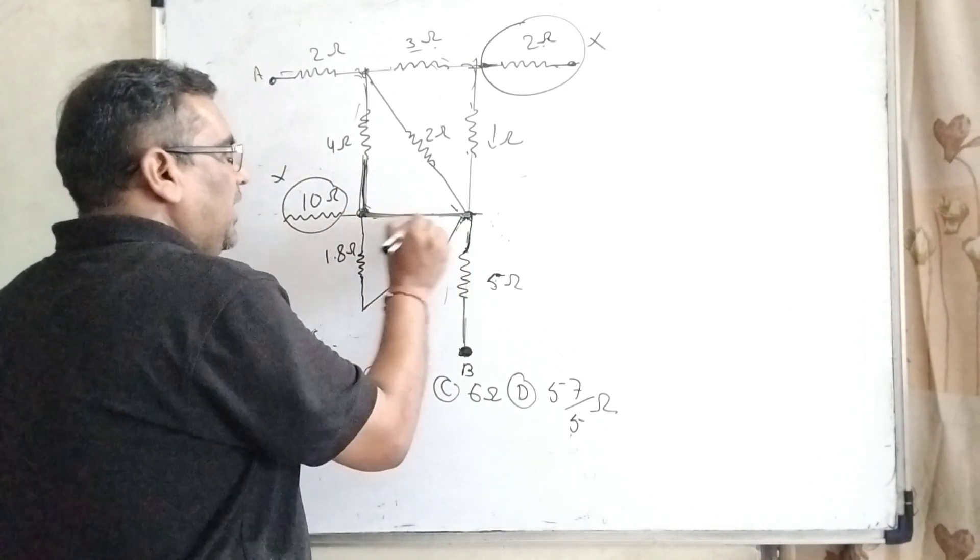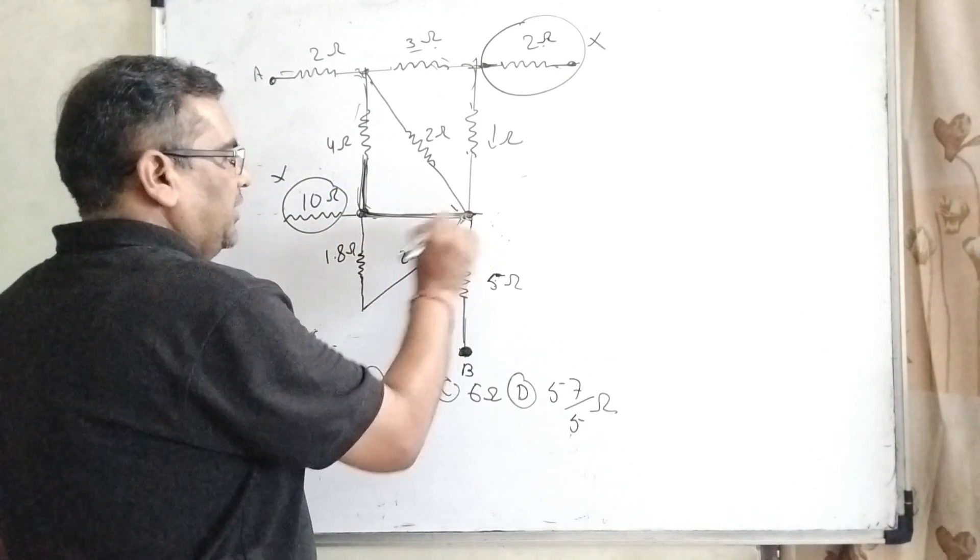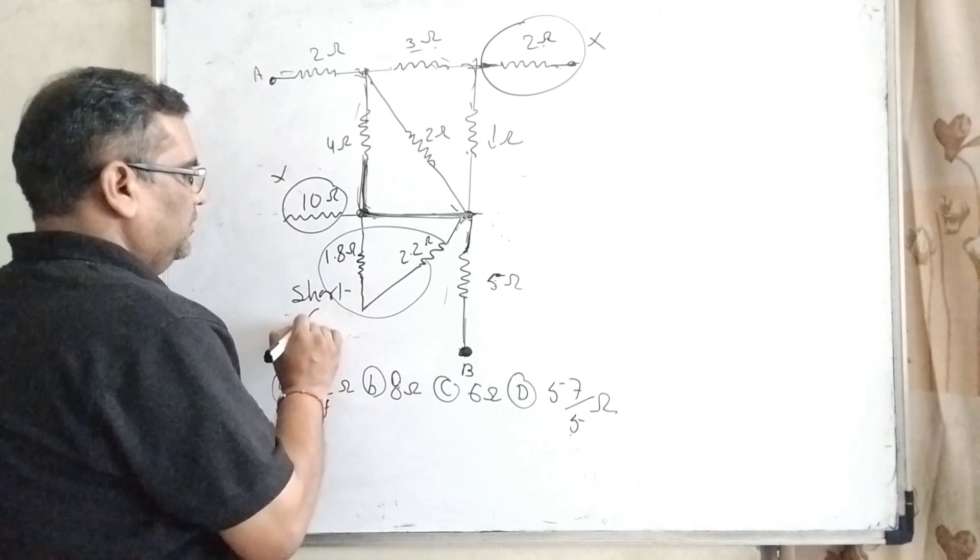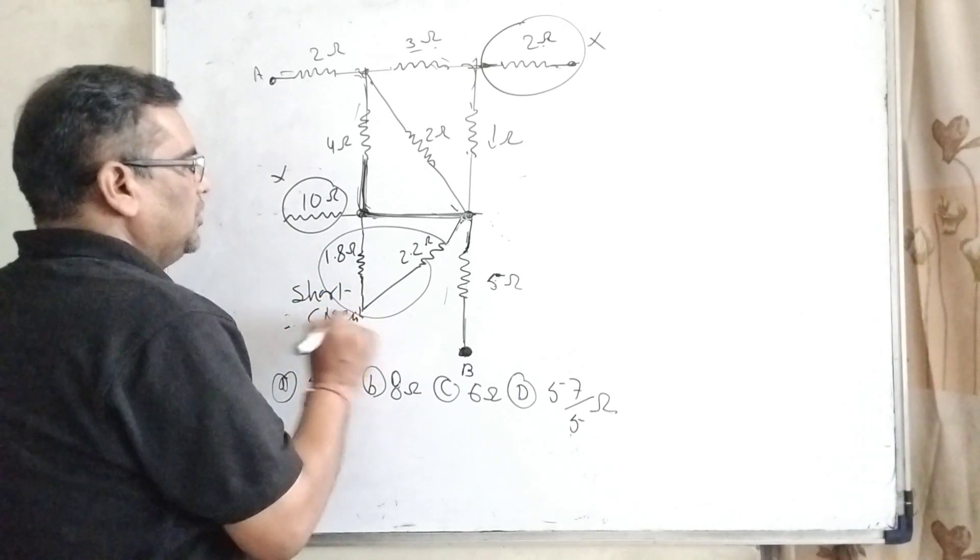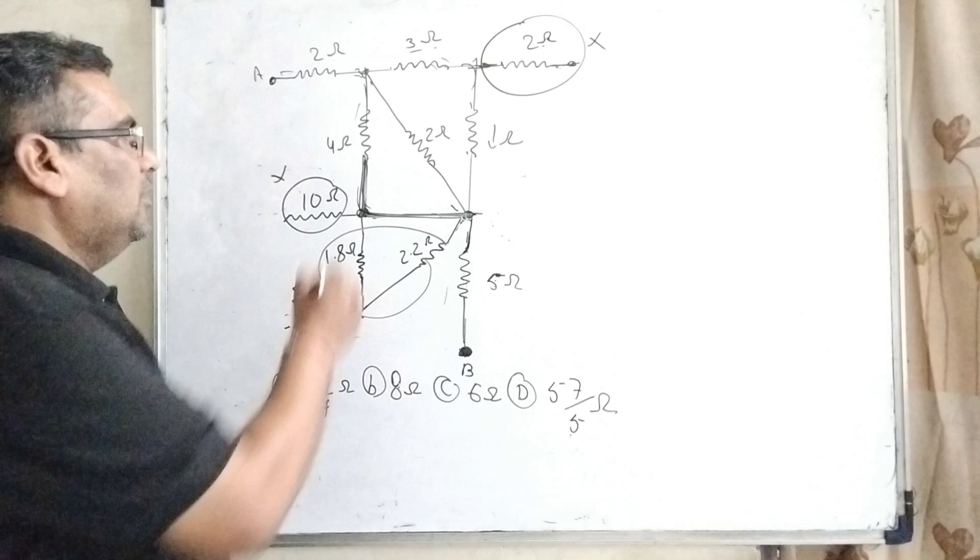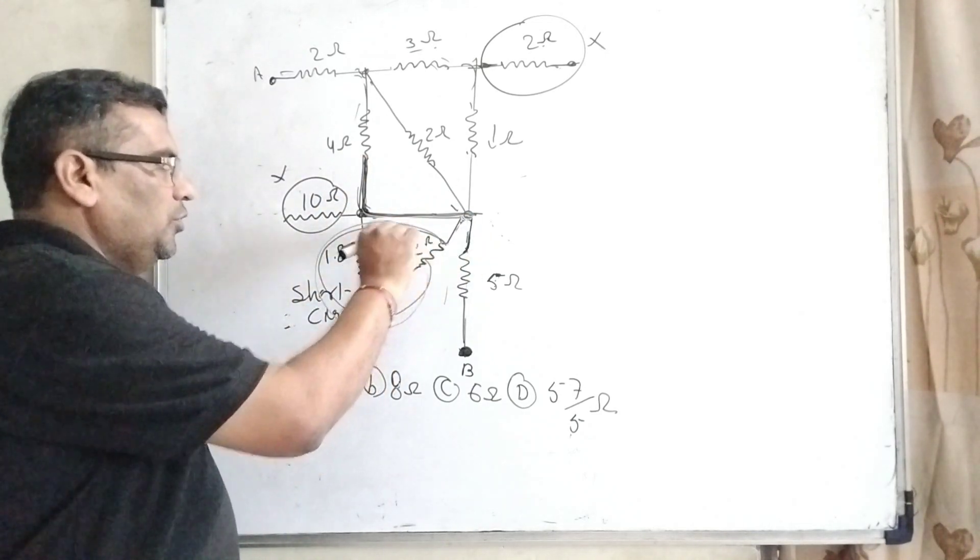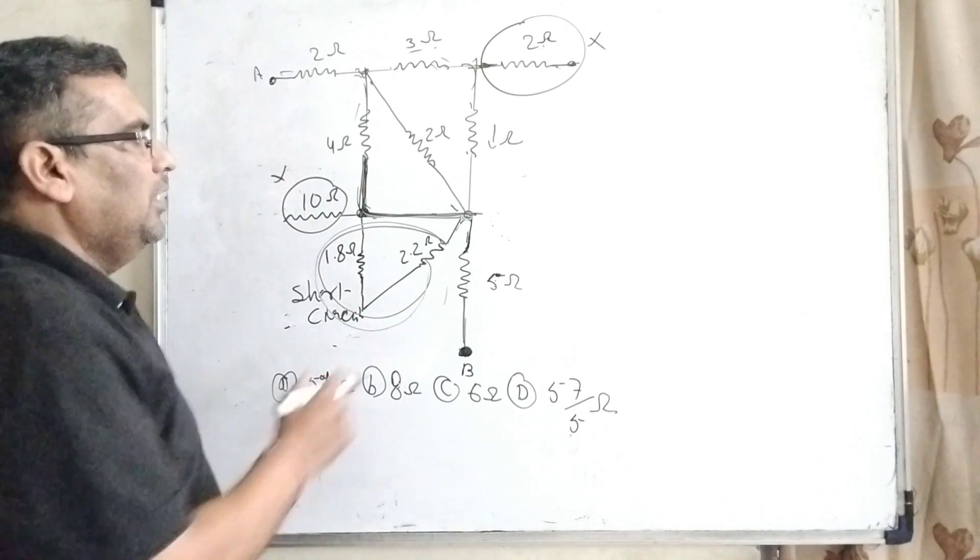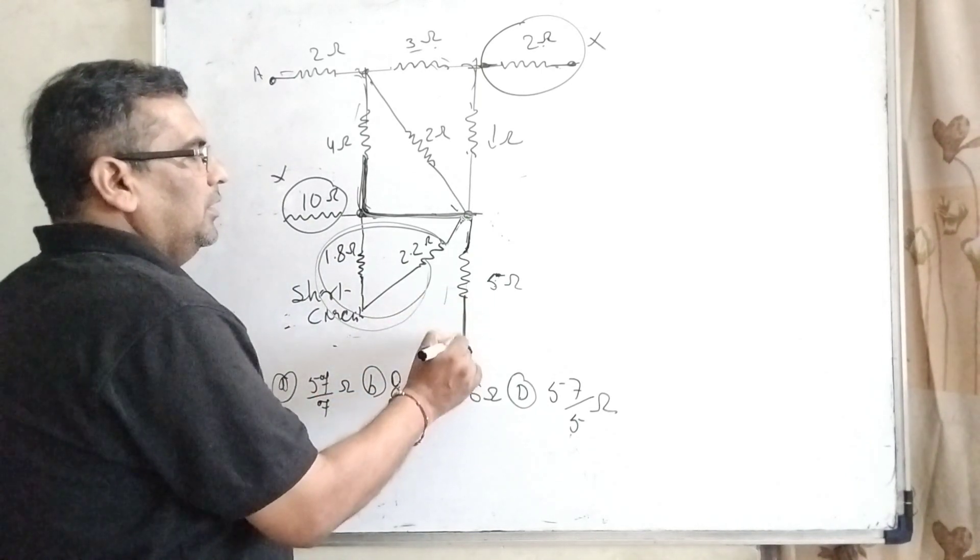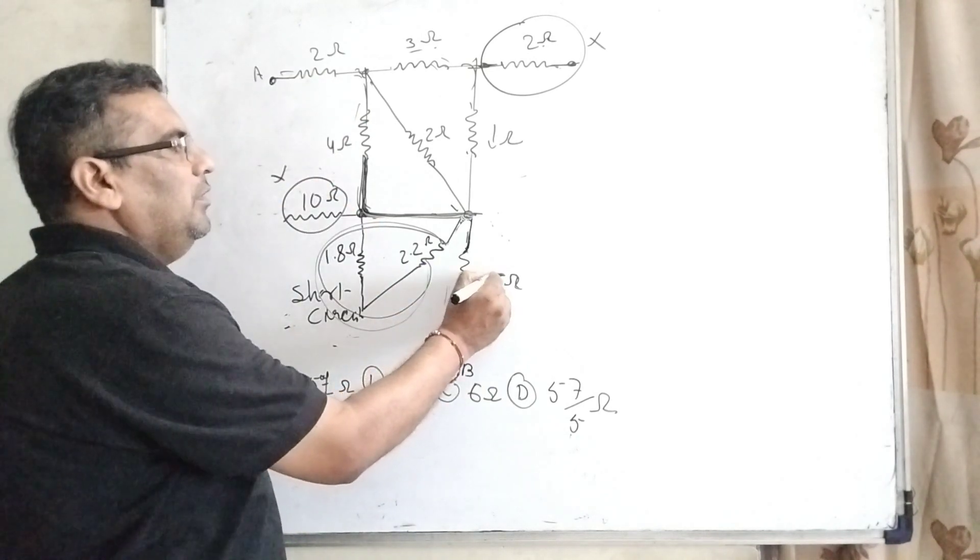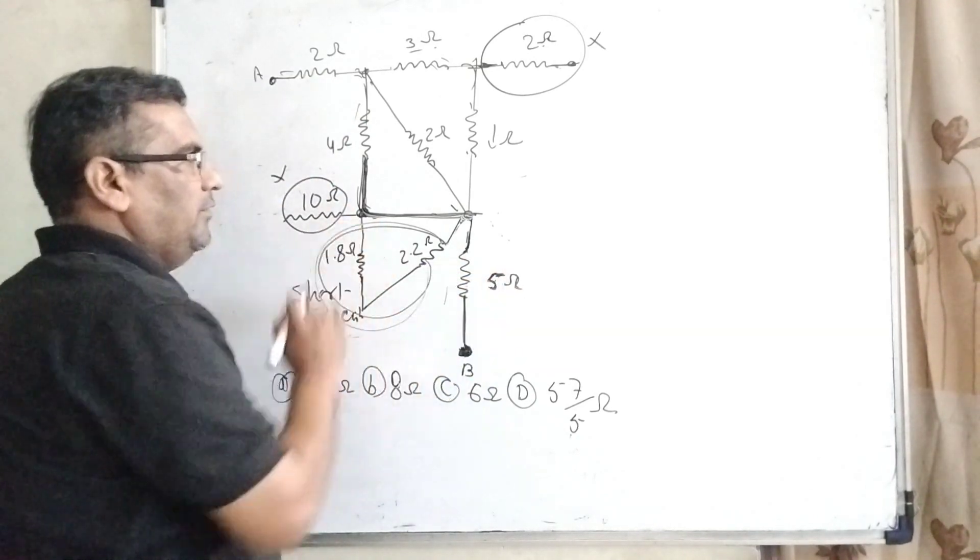So here directly current flows to this point. So here we can say short circuit. Short circuit means directly current flows in this point. So there is also no use of this resistance. Here this 5 ohm is connected between potential difference A and B, so therefore we have using this 5 ohm.